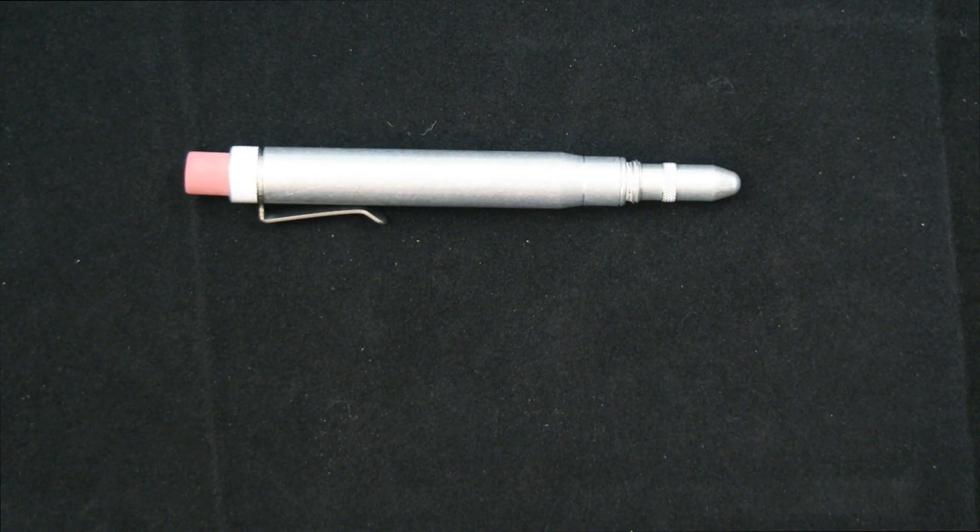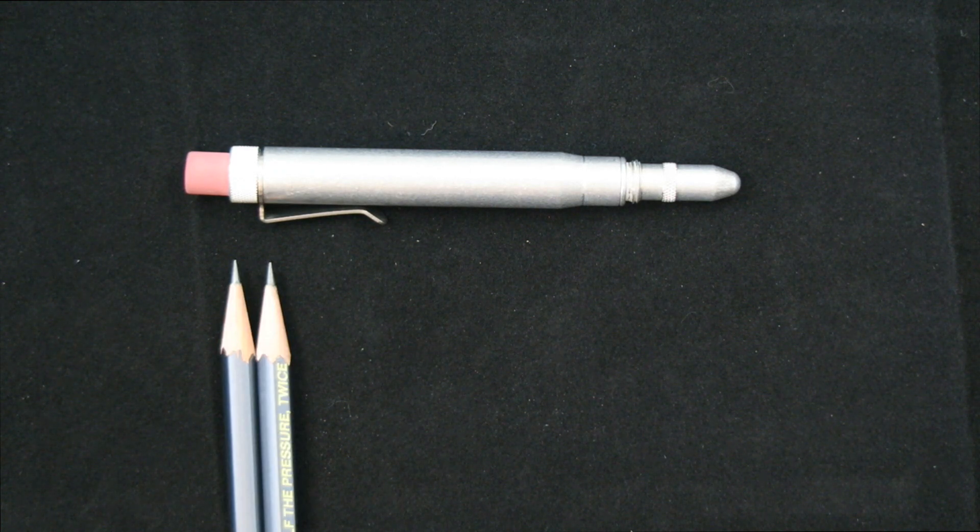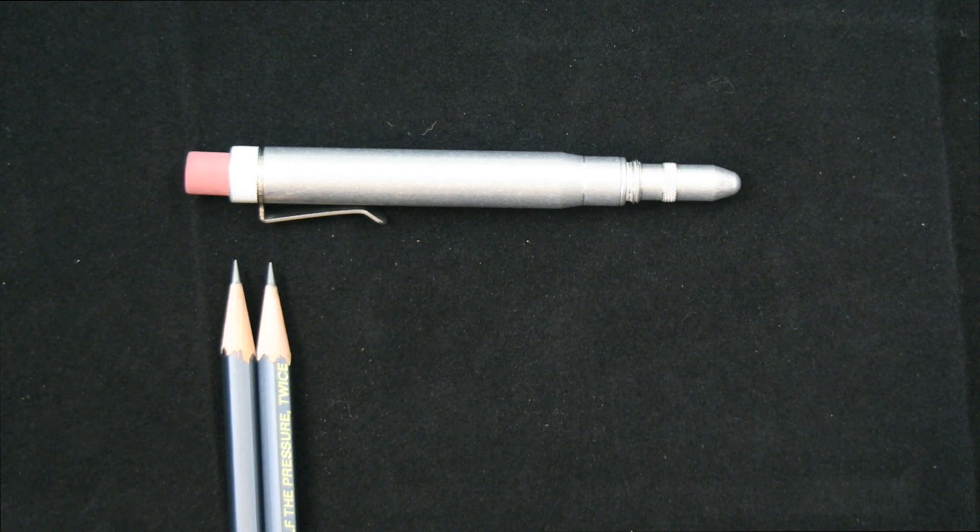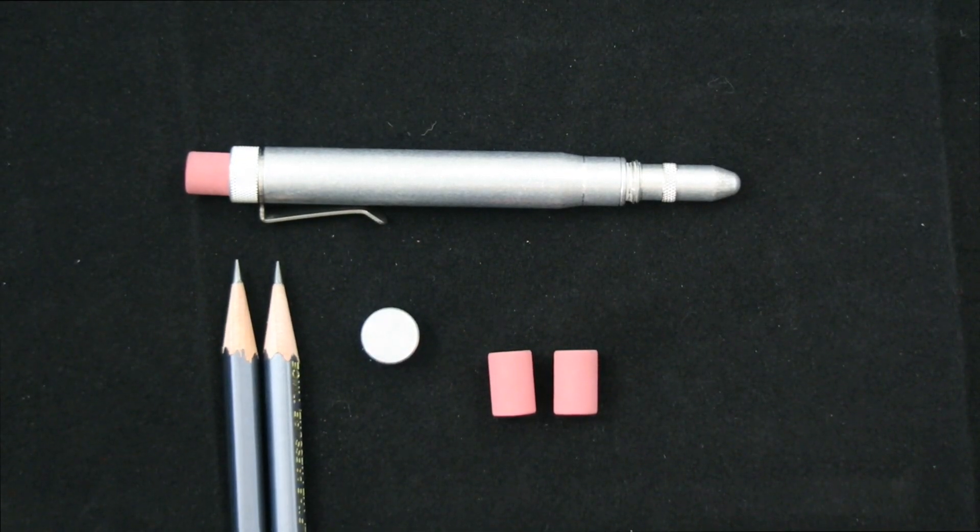So the Metal Shop Bullet Pencil comes with three Blackwing Palomino 602 pencil nubs, the one that's in the bullet pencil itself, and two spares. It also comes with the removable pocket clip, the flat cap, the eraser cap, which is on this model here, and a total of three erasers.